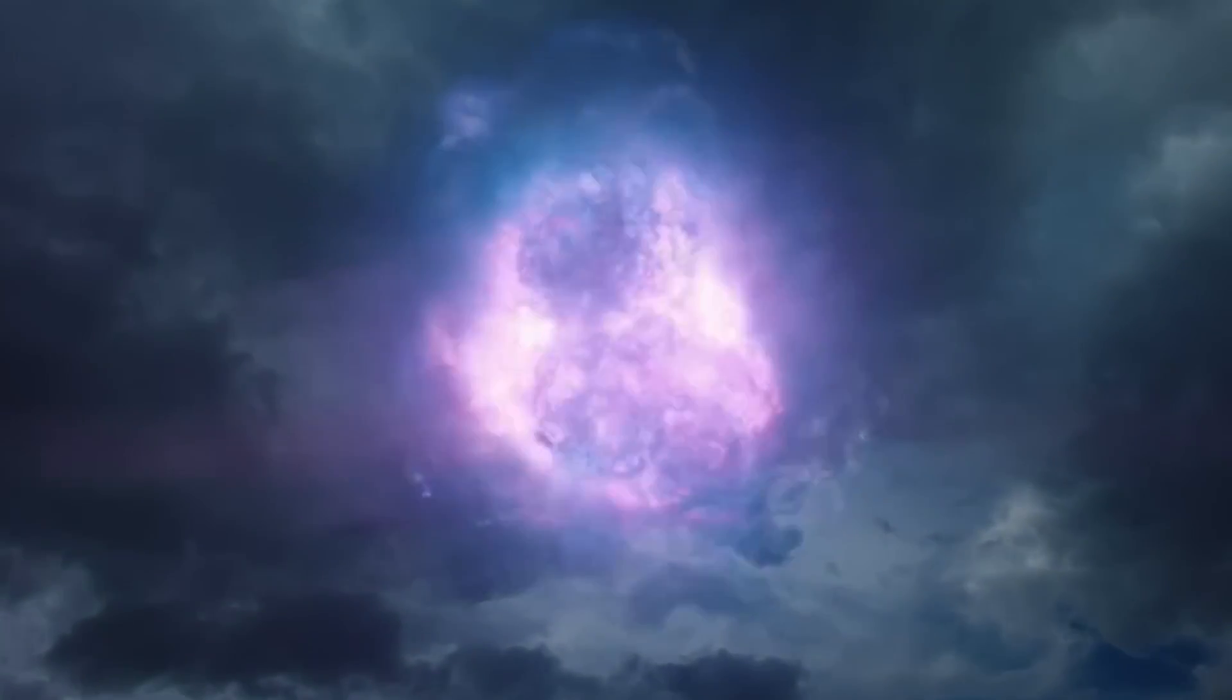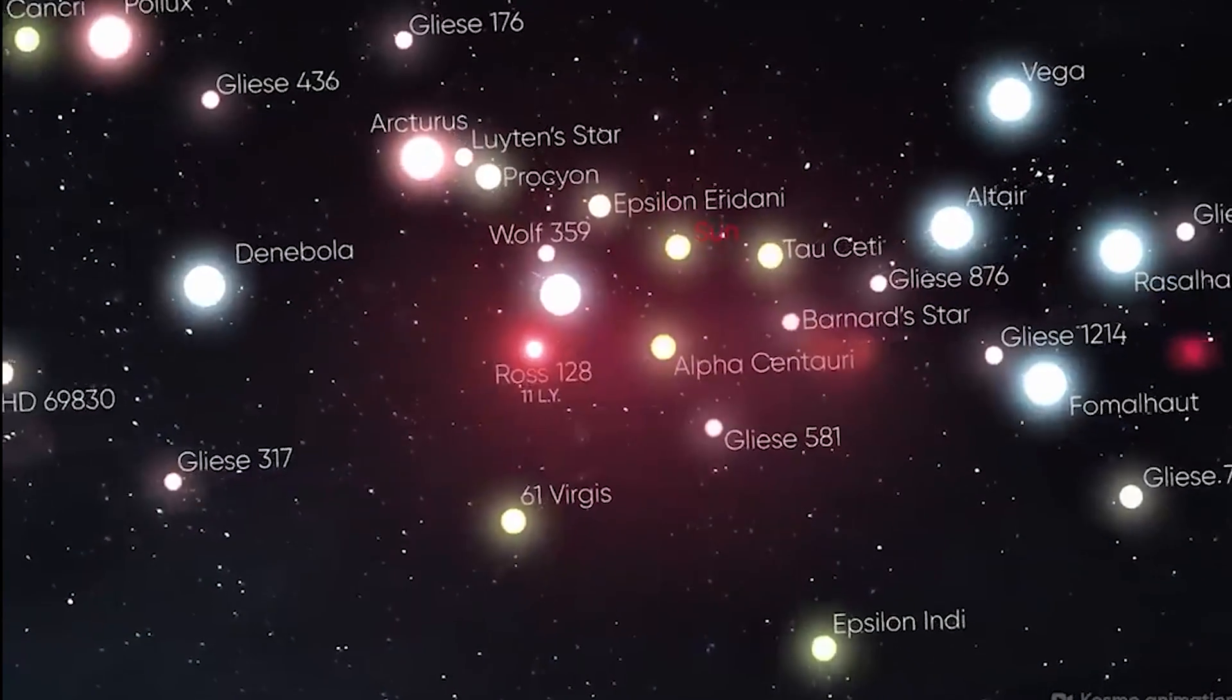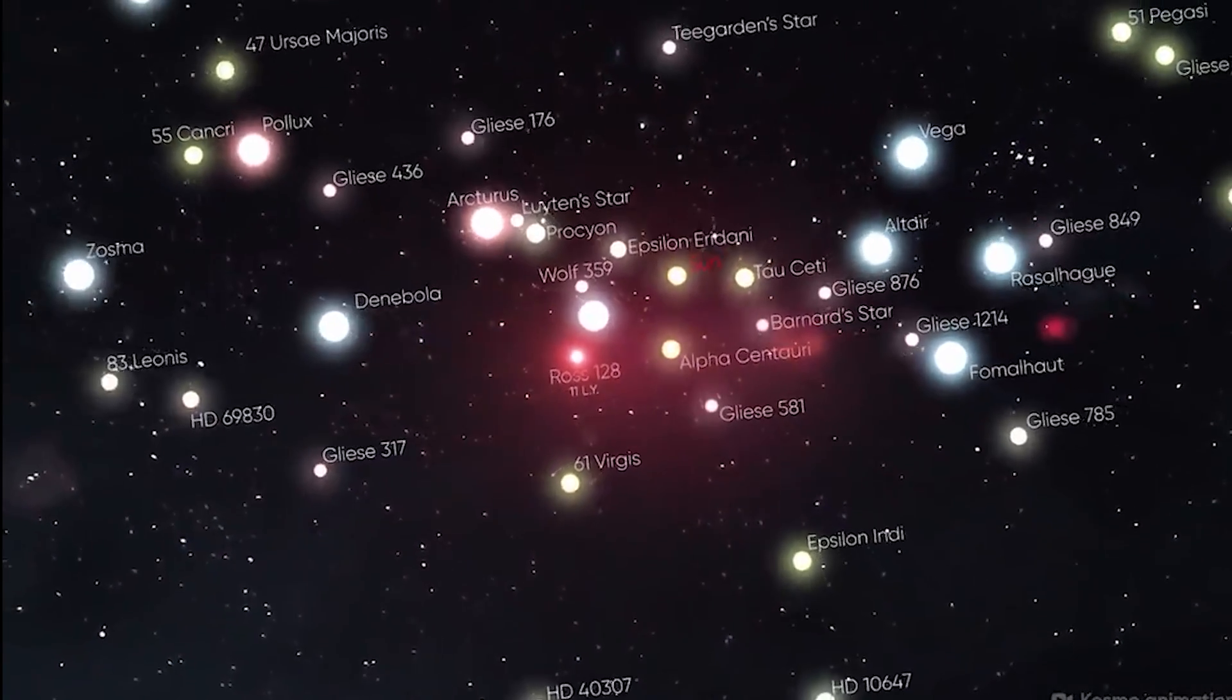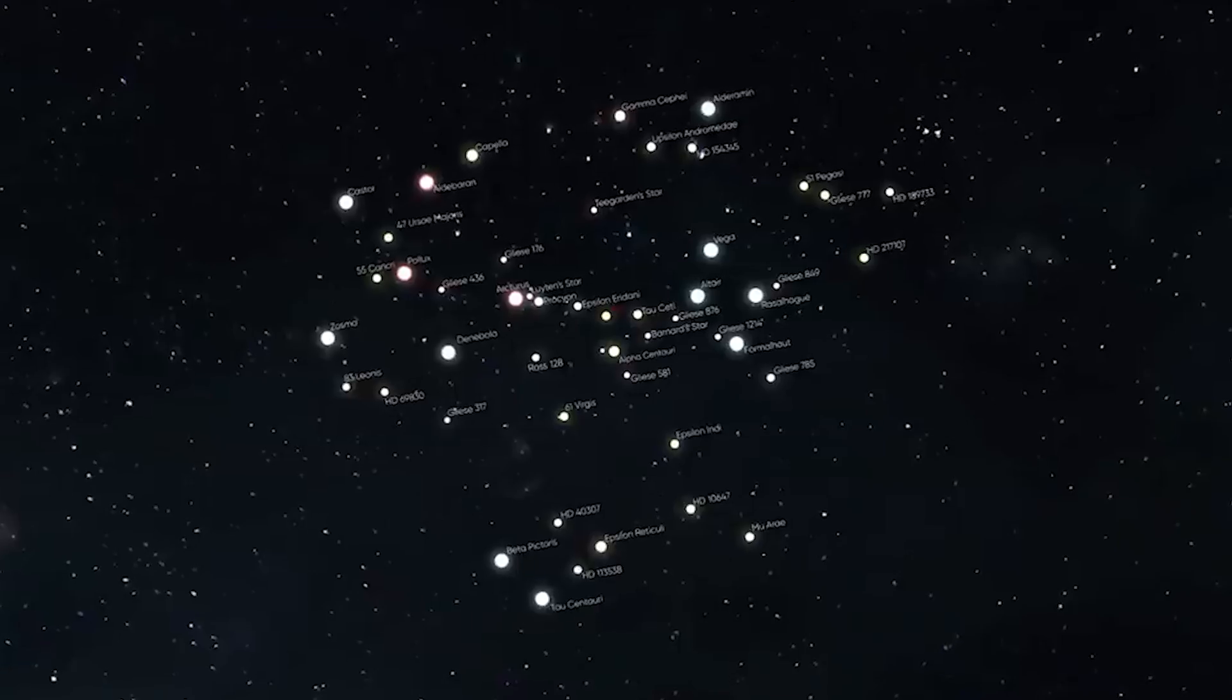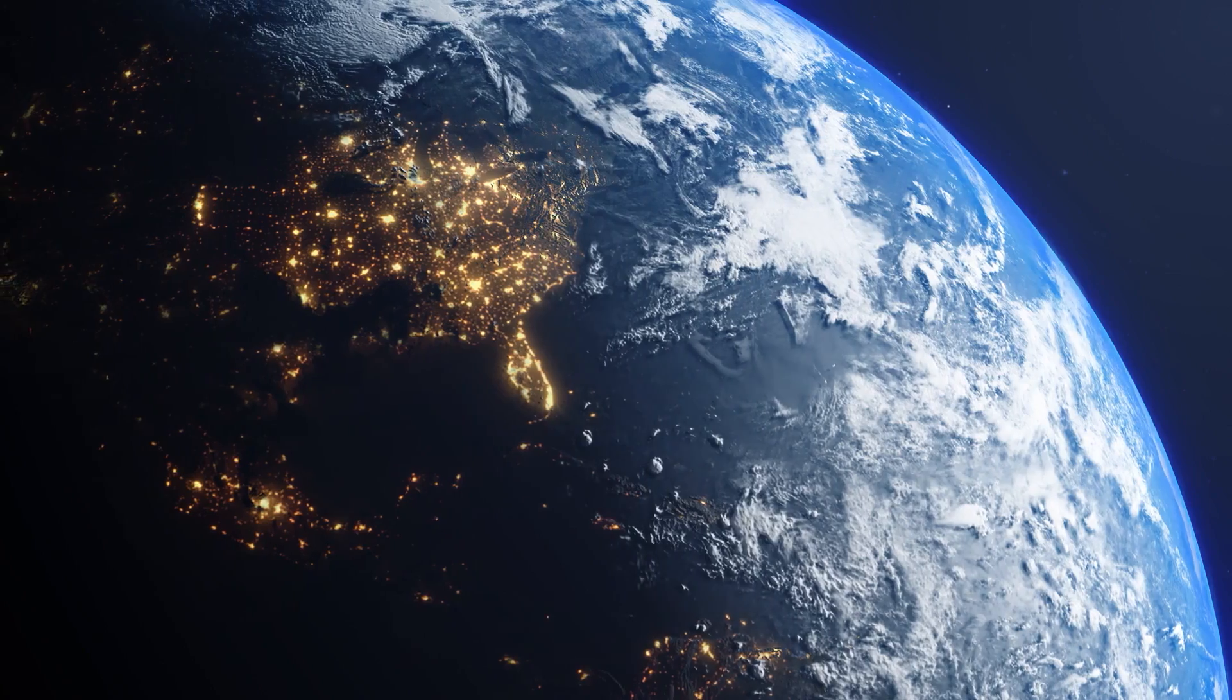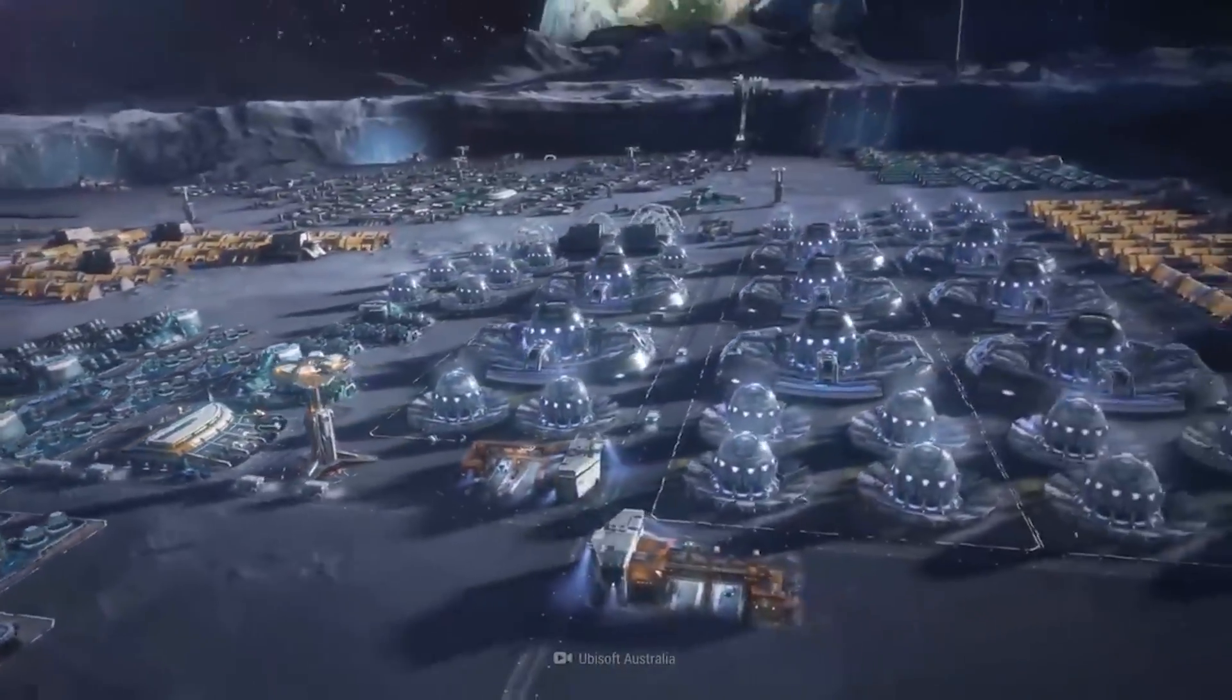Fast forward to 2150. We will send out probes to check out neighboring star systems. These probes are super fast, like something out of a sci-fi movie. They're checking out planets and moons and other solar systems and beaming back all sorts of data. Meanwhile, back on Earth, we're starting to build real-deal cities on the moon.